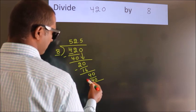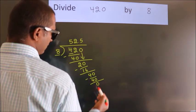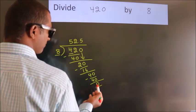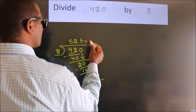Now we subtract, we get 0. Here we got remainder 0. So this is our quotient.